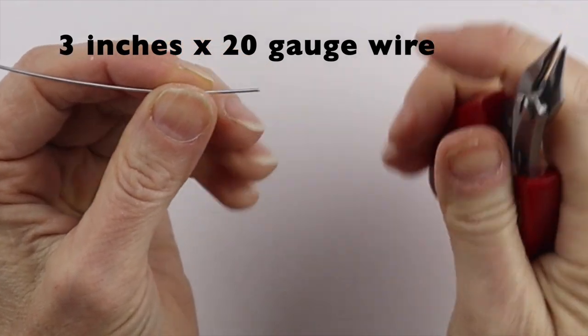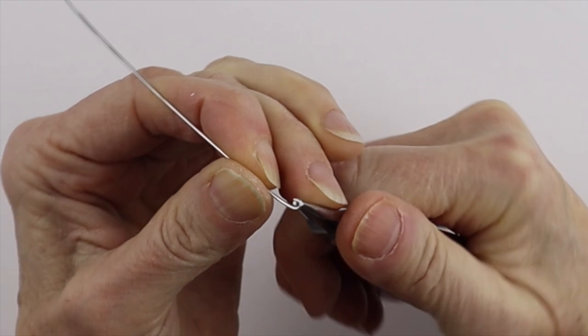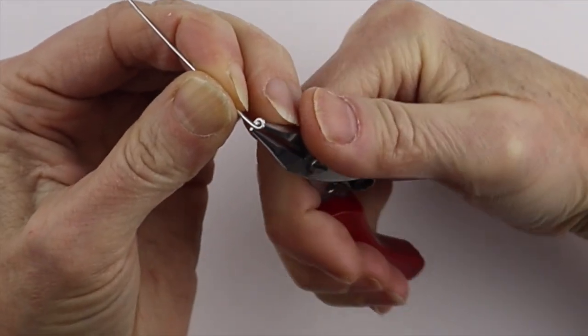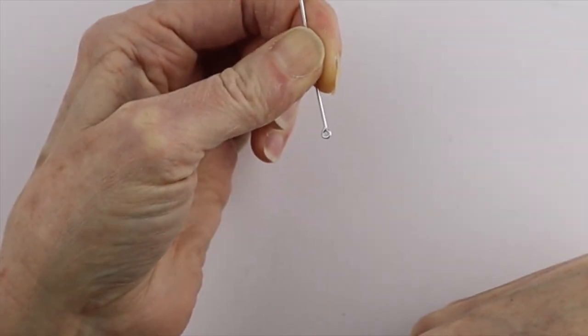Take about a 3-inch piece of 20 gauge wire, take the end and make a little loop. Then bend it back so the loop is closed and centered.